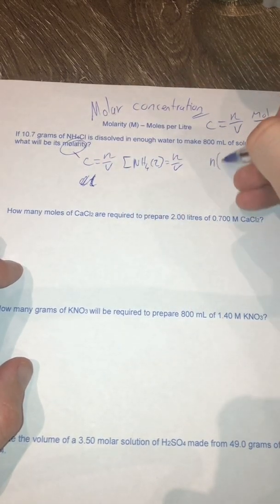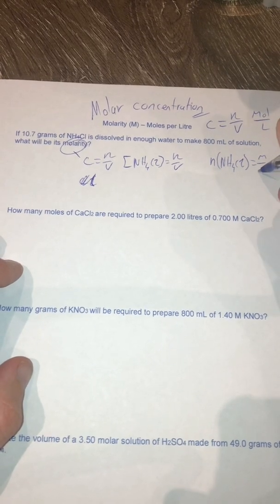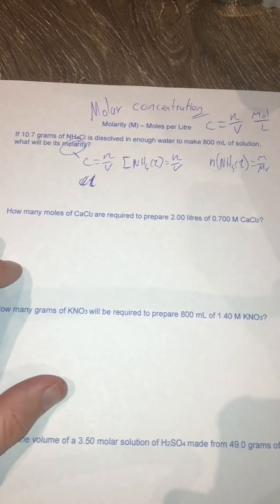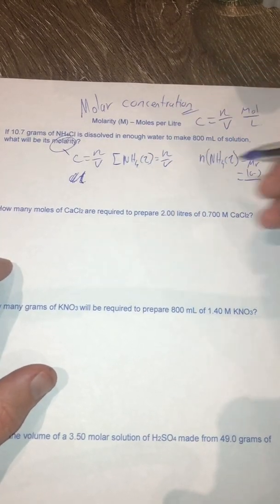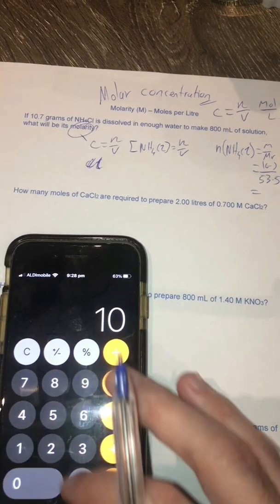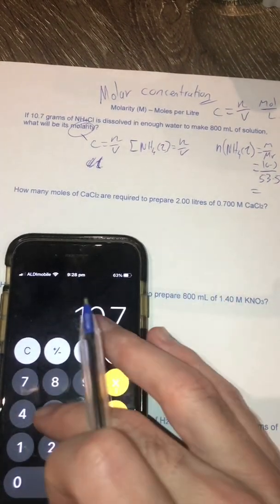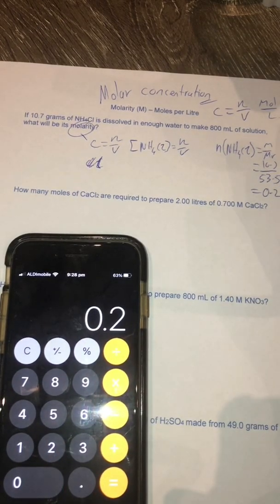Therefore my number of moles of NH4Cl is going to be equal to my mass over my molar mass. So therefore that's going to be equal to 10.7 divided by my molar mass of this, which is 53.5. 10.7 divided by 53.5 that works out to be 0.2 mol.